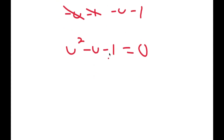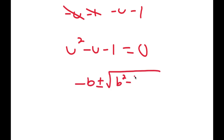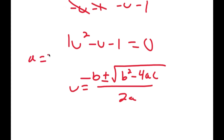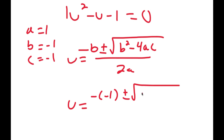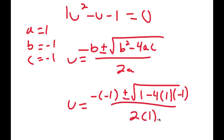Now to solve this equation, I'm going to use the quadratic formula, which is negative b plus or minus the square root of b squared minus 4ac all over 2a. So in this case, a is 1, b is negative 1, and c is negative 1. So I get u is equal to negative of negative 1 plus or minus the square root of negative 1 squared, which is positive 1, minus 4 times 1 times negative 1, all over 2 times 1.